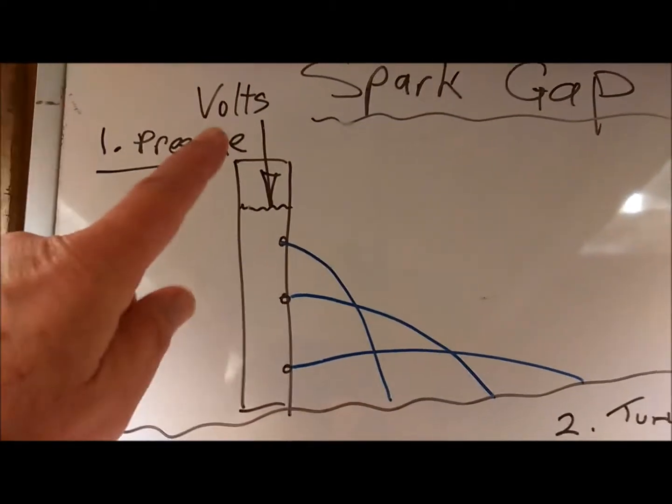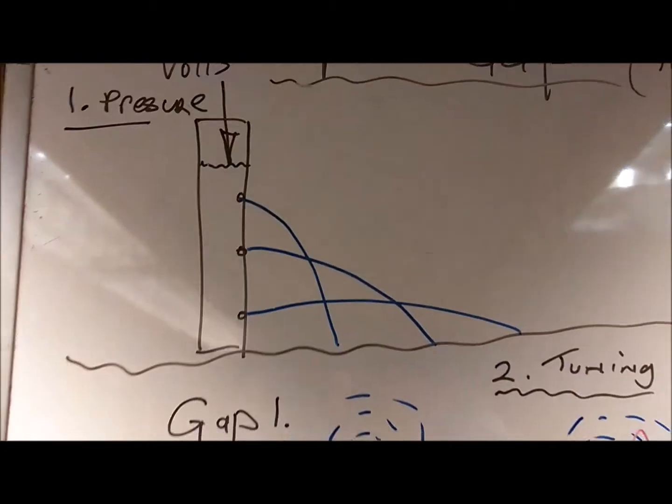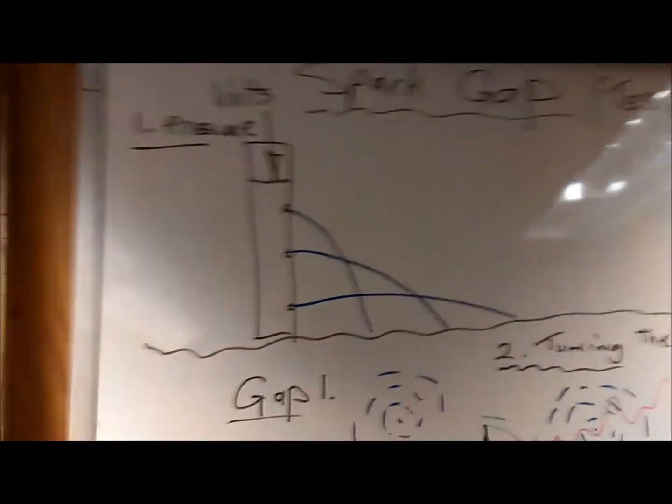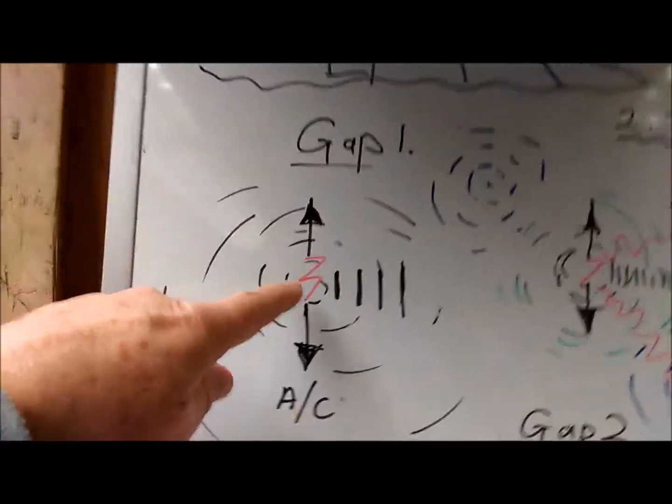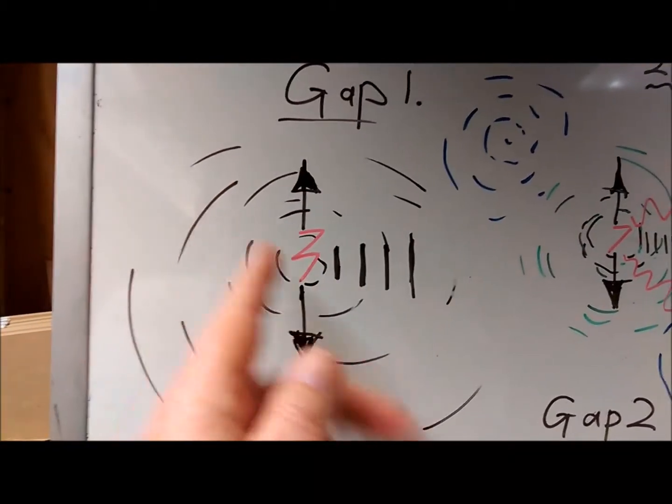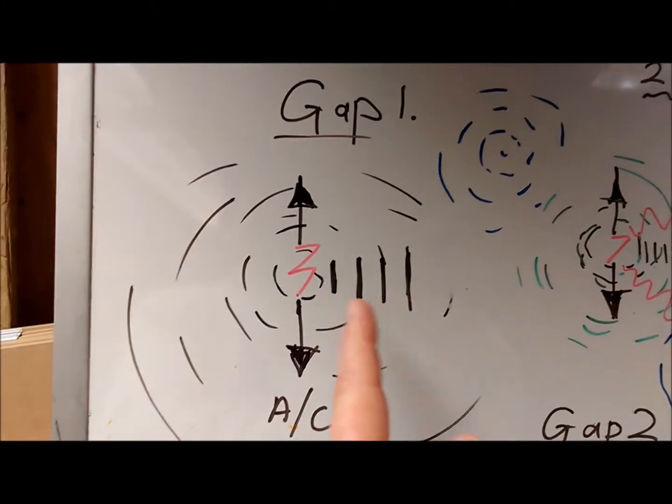Try and focus everything on the spark gap. So if we've got a spark gap here and we look out in distance, we can have a frequency which can be AC or DC.